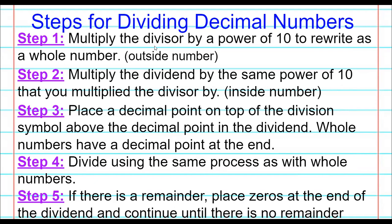Step one: multiply the divisor — that outside number — by a power of 10 so that it is a whole number. That divisor cannot be a decimal, so we're going to multiply by 10, 100, or 1,000 until the decimal is at the very end and it's a whole number. Step two: do the same thing to the dividend. If I multiply the divisor by 100, I have to multiply the dividend by 100 — we have to keep the balance.